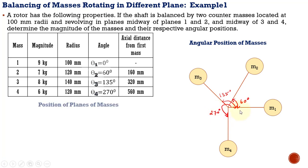Now let us see how to construct the position of planes. We are given four different masses and we are going to balance the entire system by providing two counter masses. So we are going to add two masses to balance the system, giving us a total of six different planes. The existing masses one, two, three, and four rotate in individual planes, and the two counter masses will occupy two new planes.